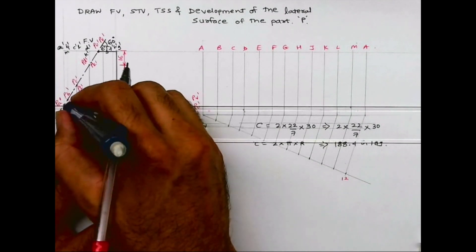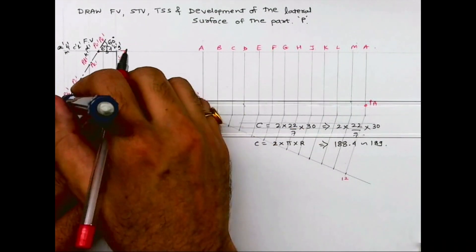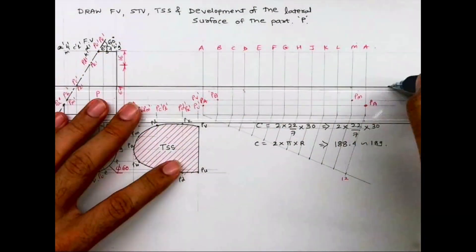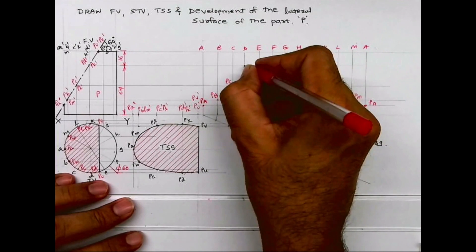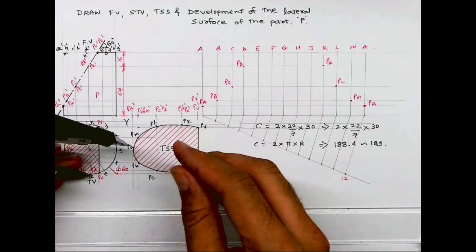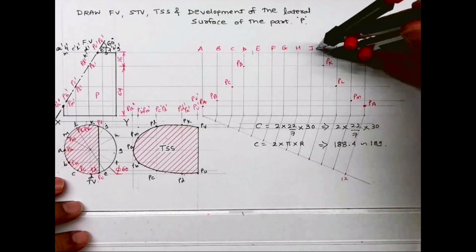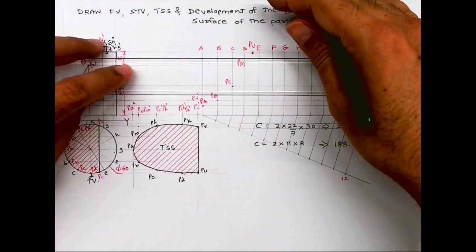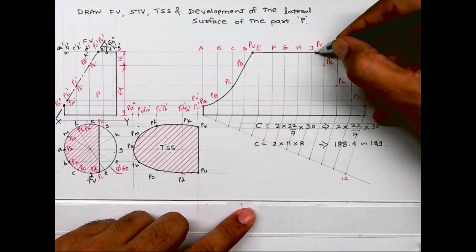Now we need to project all these points. PA dash — extend from here. Wherever it cuts on A, that is point PA. Then B and M. So this is point M, this is point PB, PL. This is PC, this is PL. PD and this is PK. Now we have PU and PV. You can't mark from the front view, so we'll take it from the top view. We'll take D to PU, cut here, then take K to PV, and cut between K and J. So this is how you get all these points. Then join all these points with freehand and you'll get the development.